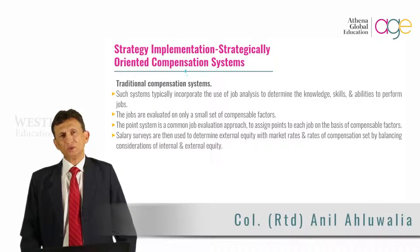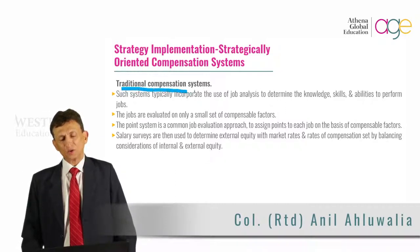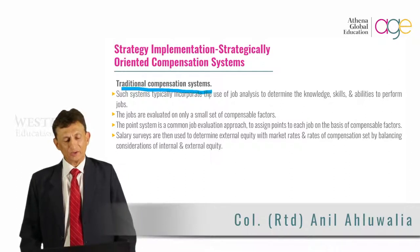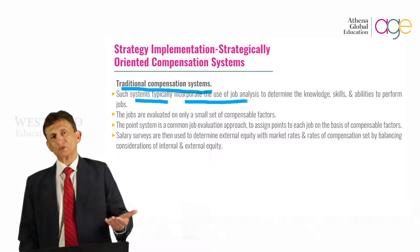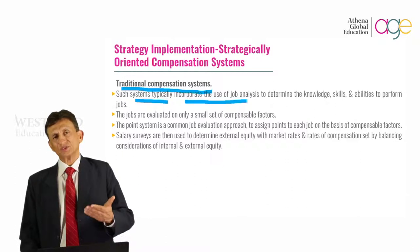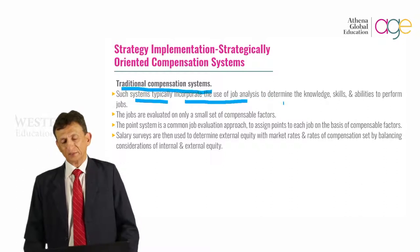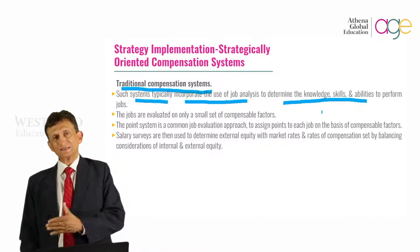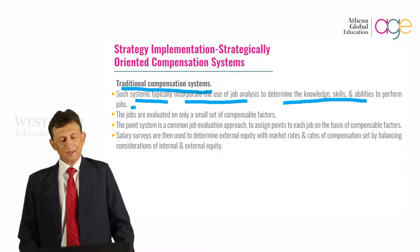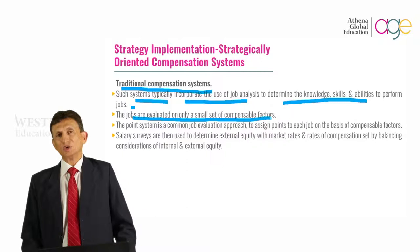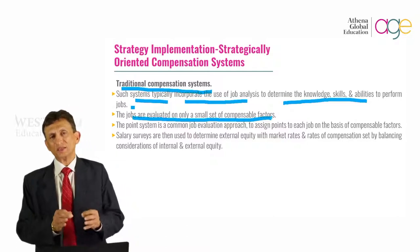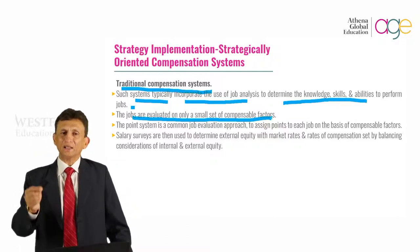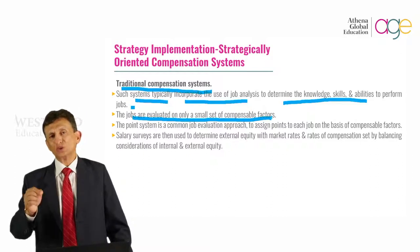In terms of some of the compensation systems that are prevalent, the first is a very traditional compensation system. Such systems typically incorporate the use of job analysis based on the job description or certain specifications required for a particular job. They determine the knowledge, skills, and abilities — known as KSAs — of the individual to perform that job. The jobs are evaluated only on a small set of compensable factors, which are those factors on which the compensation is based — each and every trait required to accomplish a particular job.